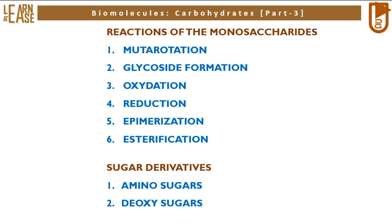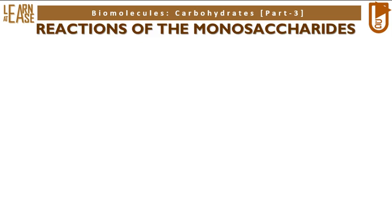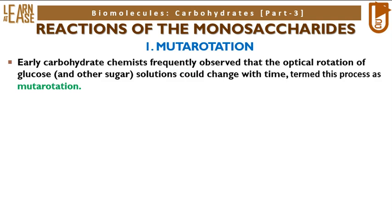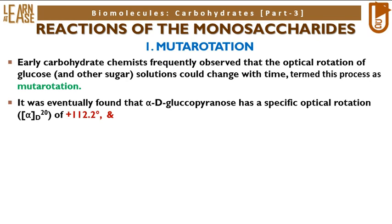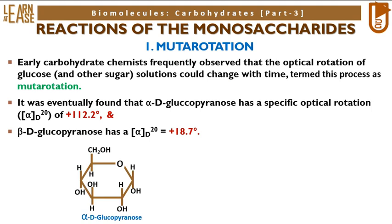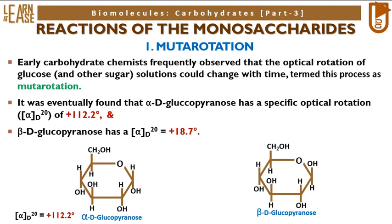Let's start with the first reaction of monosaccharides: mutarotation. Early carbohydrate chemists frequently observed that the optical rotation of glucose and other sugar solutions could change with time, and termed this process mutarotation. It was eventually found that alpha-D-glucopyranose has a specific optical rotation of +112.2 degrees, and beta-D-glucopyranose has a specific optical rotation of +18.7 degrees.